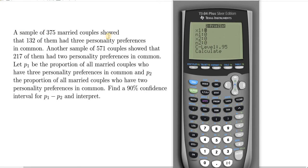A sample of 375 married couples showed that 132 of them had three personality preferences in common. So 132 is the successes, and 375 is the observations, because success is having three personality preferences. 375 is the total number of people, the sample size.